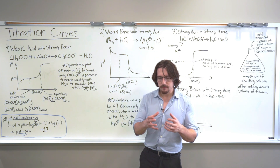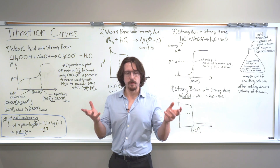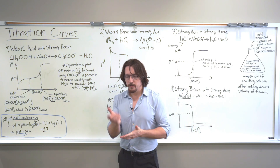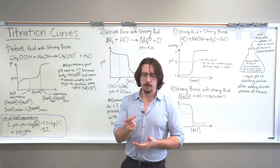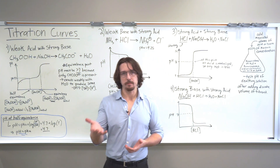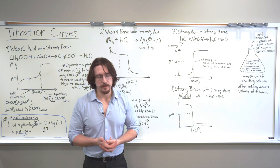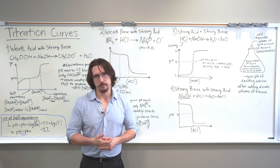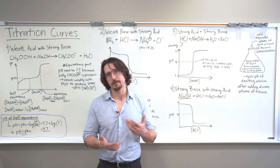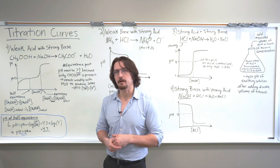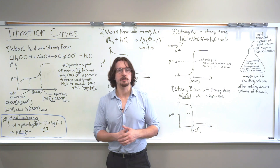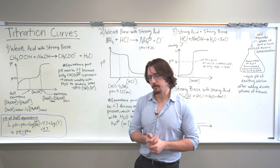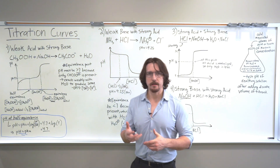The analyte has the acid or the base that we're analyzing. What we're going to do is measure the initial pH using a pH meter or a pH stick, or we can calculate it if we know the concentration. We can use pH equals negative log of the hydrogen ion concentration, or if it's a weak acid, we can calculate using the pKa.